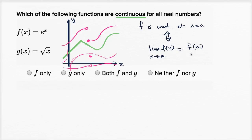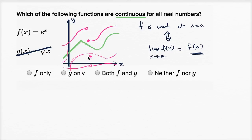So once again, in order to be continuous there, you at least have to be defined there. Now when you look at these, the one thing that jumps out — in order to be continuous for all real numbers — let's think about f of x equals e to the x. It is defined for all real numbers. Most of the common functions that you've learned in math don't have these strange jumps or gaps or discontinuities. Some of them do, like one over x. But e to the x doesn't have any of those. We could graph e to the x — it looks something like this. It's defined for all real numbers, with no jumps or gaps of any kind.